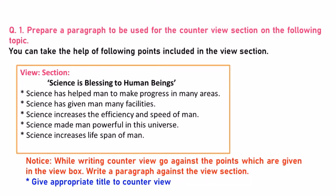Now, a question is given for you to study better and understand how to write the counter view for any topic. Question number one: Prepare a paragraph for the counter view section on the following topic. You can take help from the following points included in the view section. View section: Science is a blessing to human beings. Science has helped man to make progress in many areas. Science has given man many facilities. Science increases the efficiency and speed of man. Science made man powerful in the universe.